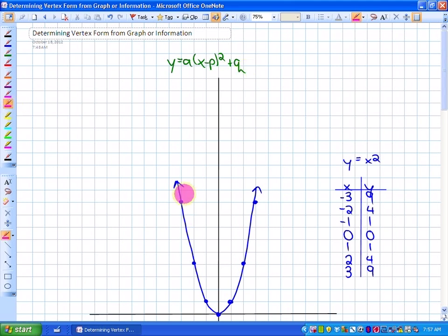The typical y equals x squared graph is right here for you, and the table of values is to the right. Any input value should be squared to give you an output, so negative 3 squared is 9, etc.